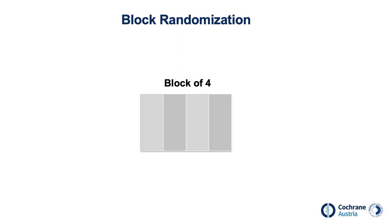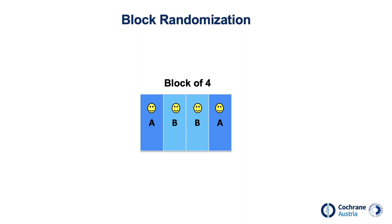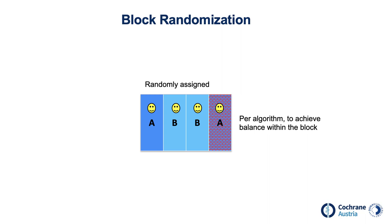Let's look at one example using a block of 4. The first participant is assigned with simple randomization to group A. The second participant also gets randomly assigned and ends up in group B. Likewise, the third participant is randomly assigned to group B. To achieve balance within the block, the fourth participant is now assigned to group A without randomization — per algorithm to achieve balance. Although this method works well to achieve balanced groups, the last assignment is predictable when the previous assignments within the block are known. Predictable assignments are always problematic for randomized control trials.